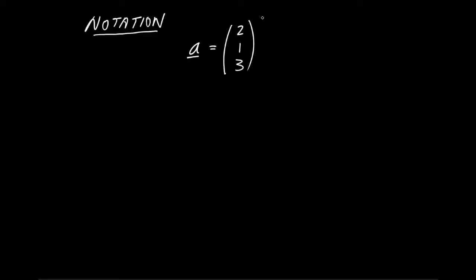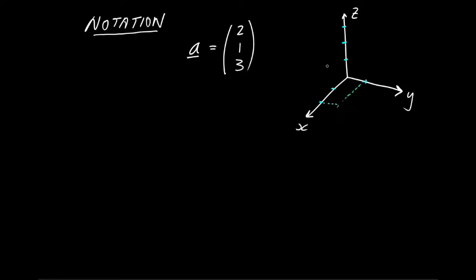If you haven't seen a vector specified before, think of the Cartesian axes — the x, y, z axes. Think about coming out from the origin 2 in the direction of x, 1 in the direction of y, and 3 in the direction of z. We think of our vector as an arrow from the origin to this point in space. That direction and length of arrow is our visualization of the vector. So the vector is coming towards us out of the screen and has components 2, 1, 3.